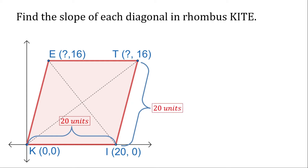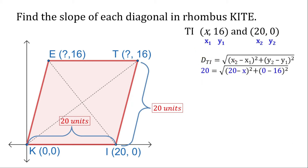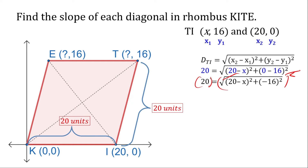Let's find the measurement of TI. We know TI measures 20 units, so we substitute the values we have. We don't have the x-coordinate of T, so we use the variable x. Assigning point 1 and point 2, we use the distance formula. We know the distance of TI is 20, so we substitute 20 on the left side, then x₂ is 20, x₁ is x, and y₂ minus y₁ is 0 minus 16.